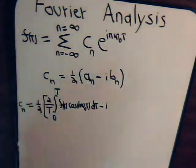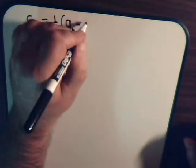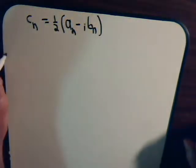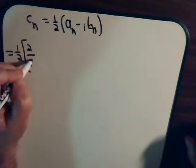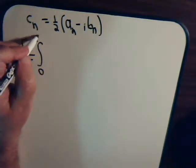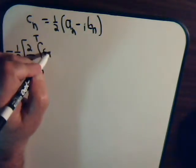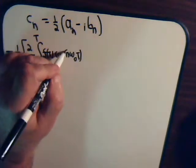Remember this is our definition for c sub n. So c sub n equals 1 half a_n minus i b sub n. So that's going to equal 1 half, and then a sub n, that is 2 divided by the period, and then we have the integral 0 to T, f of t, times the cosine n omega t, dt.